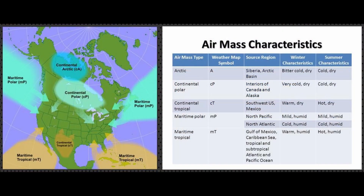Now that we have the first half of the air mass classification, we're going to look at the second half, which involves temperature at given latitudes. We indicate that as Arctic, polar, tropical, and equatorial — Arctic being the coldest regions and equatorial being the hottest. We use uppercase letters for these classifications: capital A for Arctic, capital P for polar, capital T for tropical, and capital E for equatorial. The Arctic and polar regions are pretty similar and cool, while the tropical and equatorial regions are also pretty similar, being warmer.